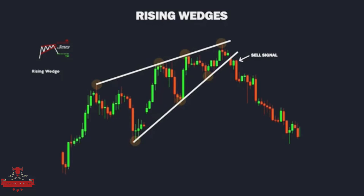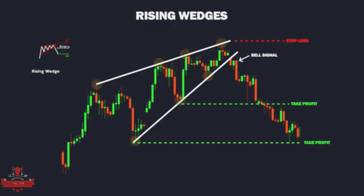After the break, the pair should retest the support previously broken, which is now acting as resistance, as confirmation. The entry point is set at the confirmation level, and stop losses are usually placed at the swing high previous to the break. The wedge chart pattern offers extra profit taking options depending on the strength of the break — you can select any preliminary support set when the formation developed.